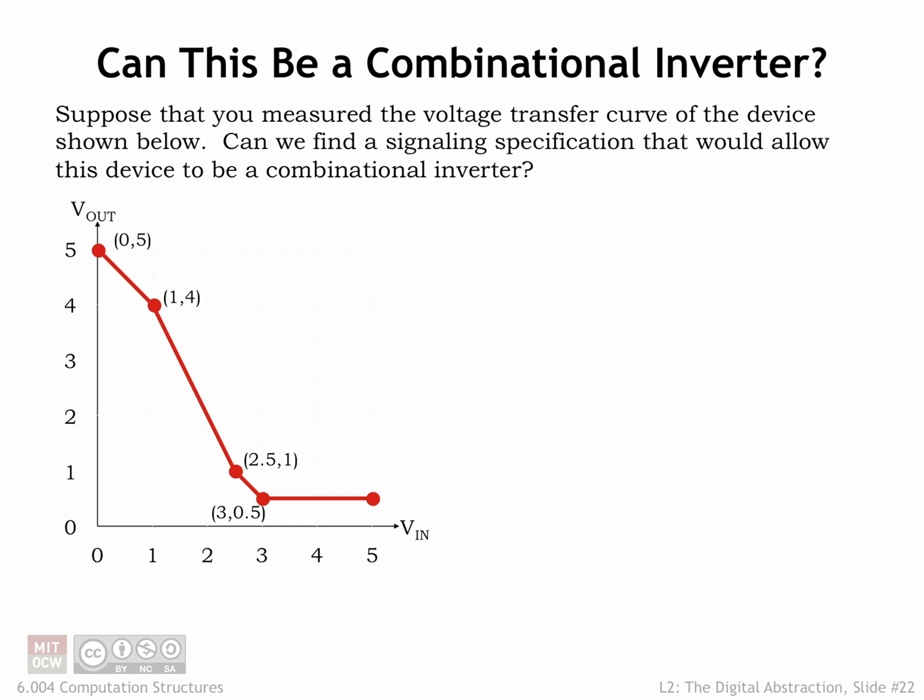In other words, can we pick values for the voltage thresholds VOL, VIL, VIH, and VOH so that the shown VTC meets the constraints imposed on a combinational device?